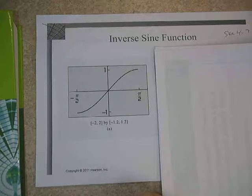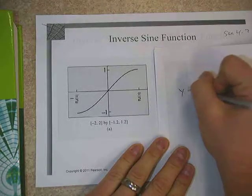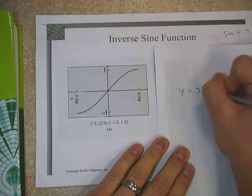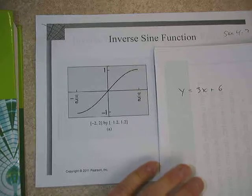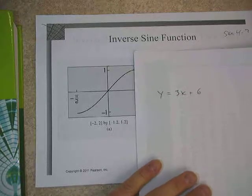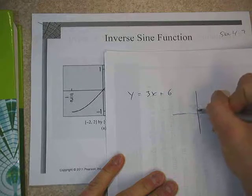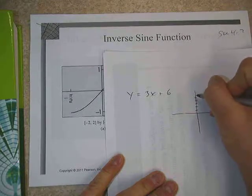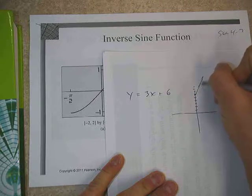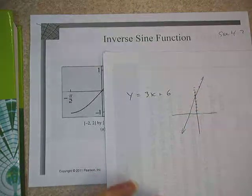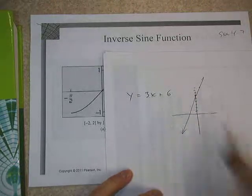Just a reminder, we have some experience with inverses from our work in the past. We know that, for instance, if we have an equation like y equals 3x plus 6, which is a linear function, one of the things that we know about inverses is that in order to have an inverse that's a function, the function has to be 1 to 1. So if I were to graph 3x plus 6 on our coordinate plane, 1 to 1 means that it has to pass the horizontal line test.